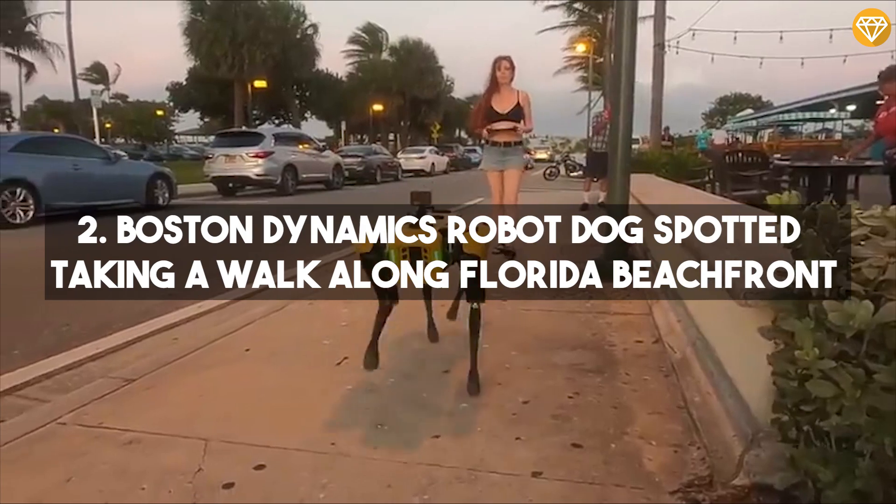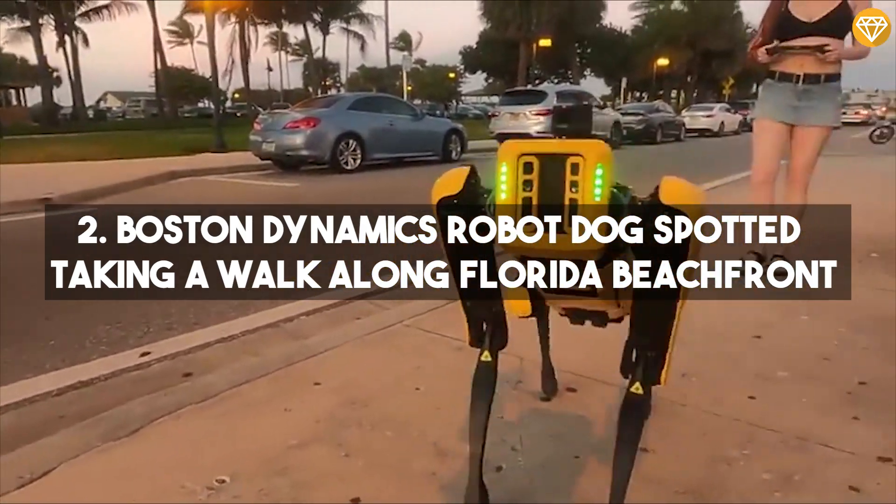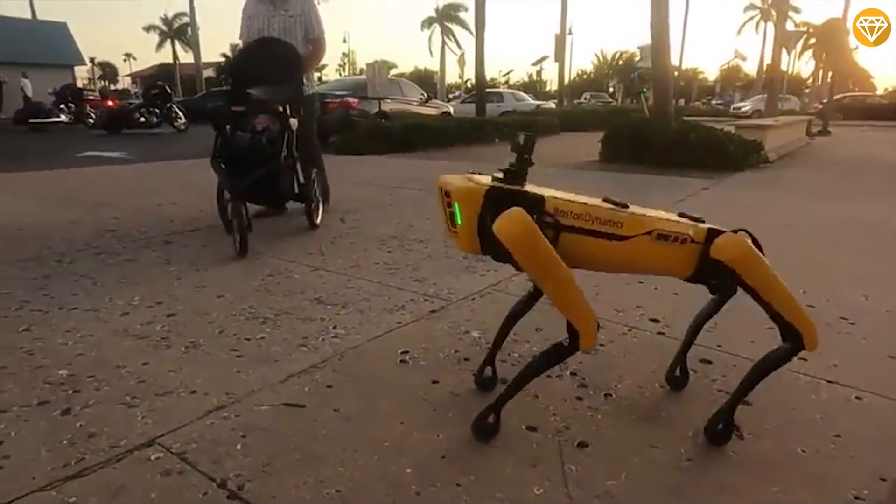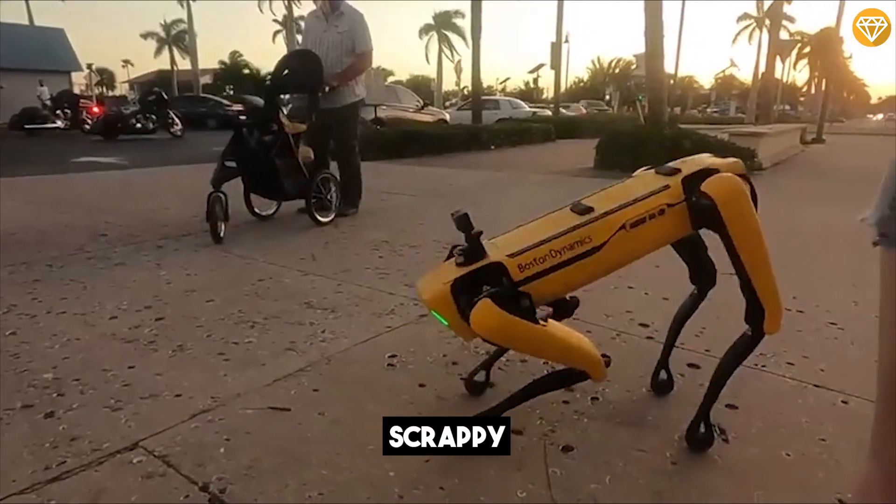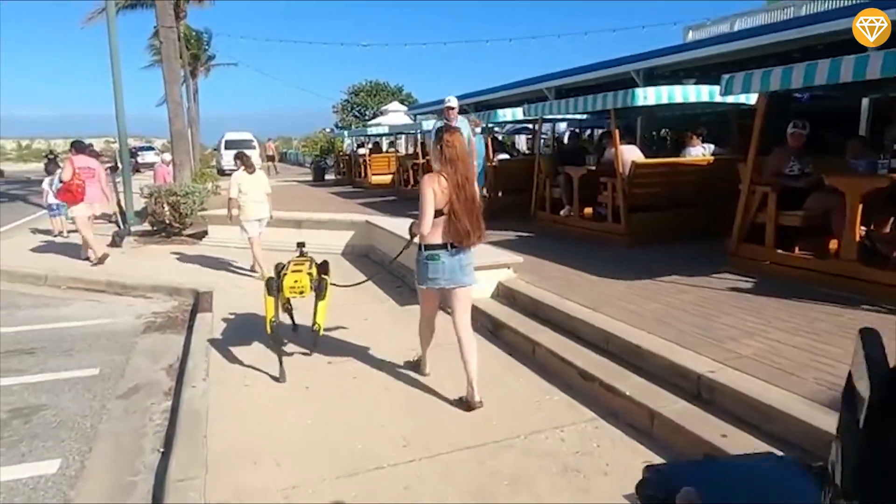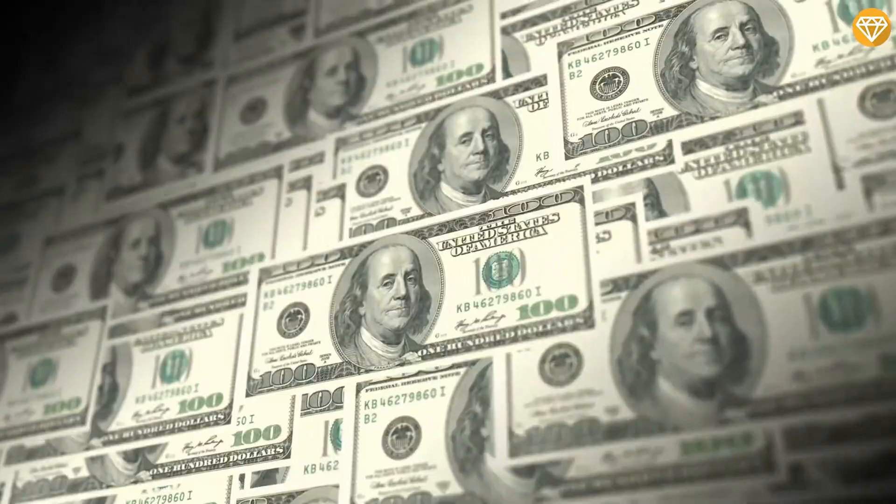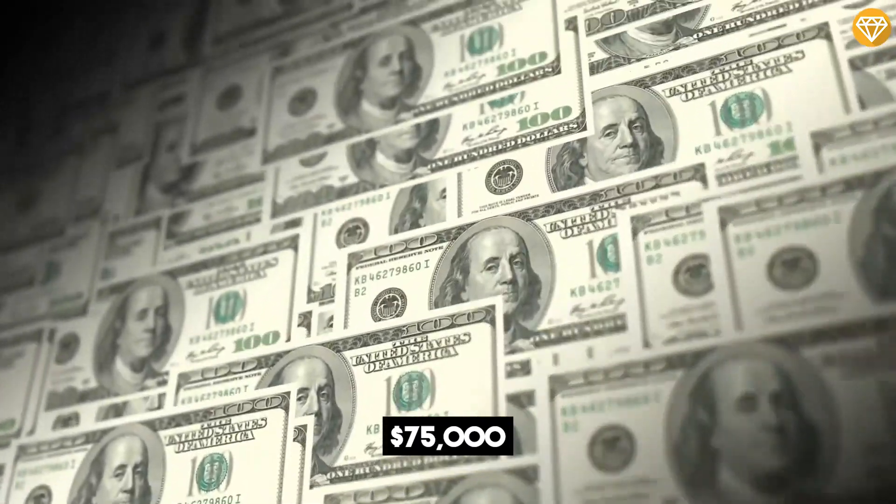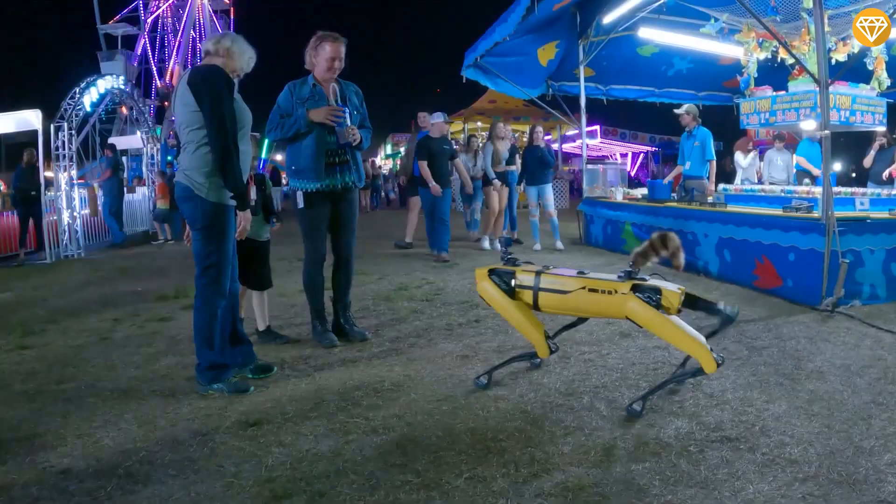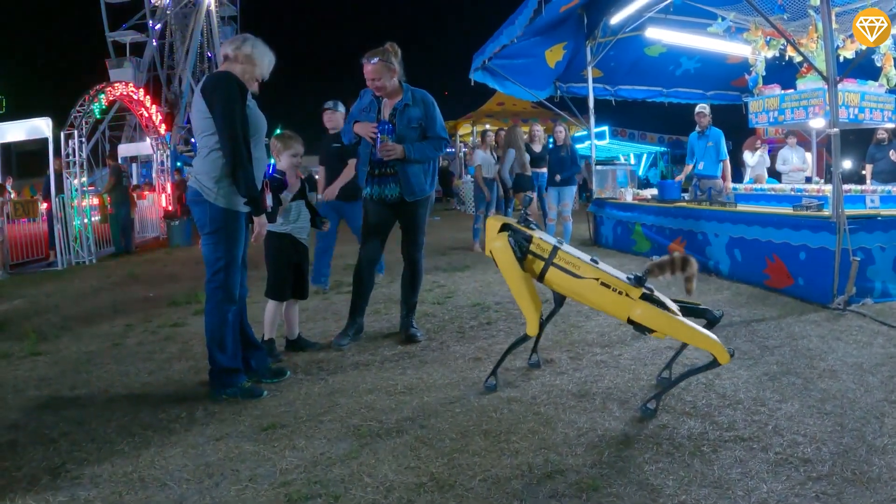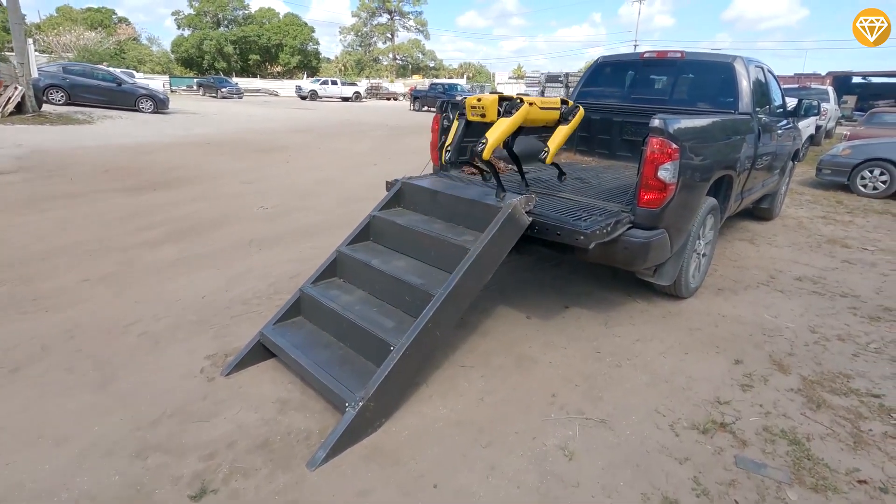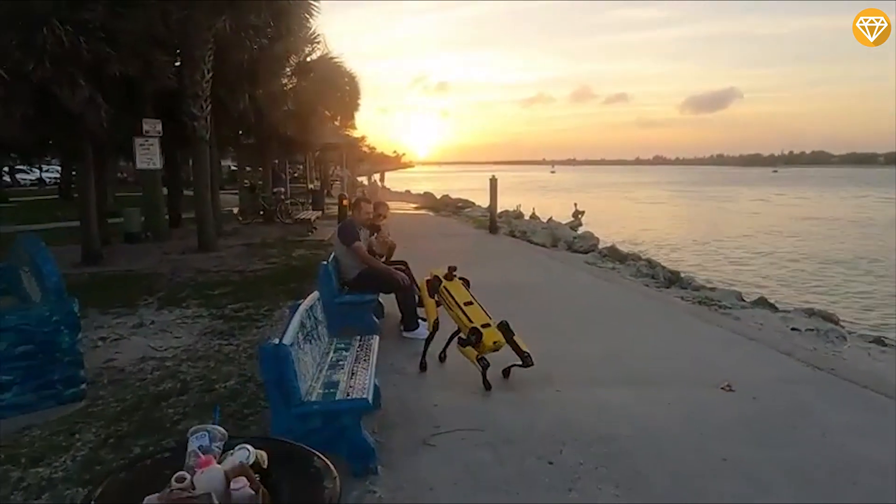Number 2, Boston Dynamics Robot Dog Spotted Taking a Walk Along Florida Beachfront. A video capturing a Boston Dynamics Robot Dog named Scrappy strolling along a Florida beachfront has recently surfaced, showcasing its impressive abilities and slightly eerie nature. Priced at $75,000, these robotic canines have been used in space testing and crime scenes. Scrappy demonstrated typical dog behaviors like sitting and following commands while navigating obstacles.